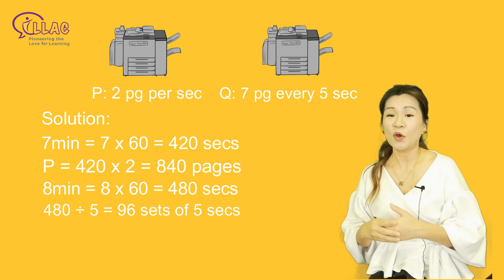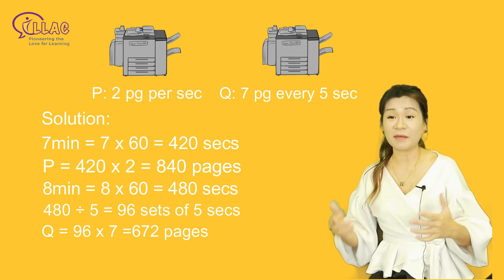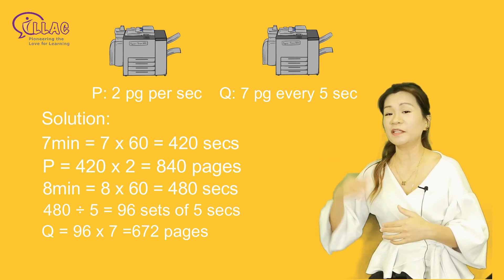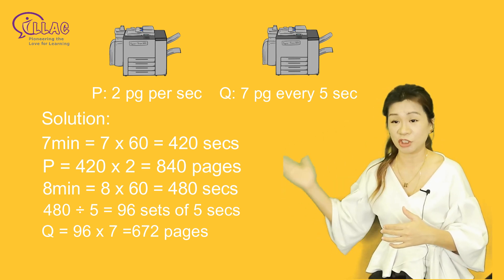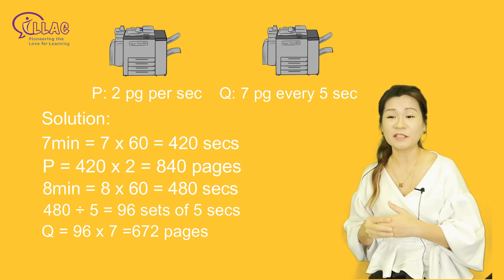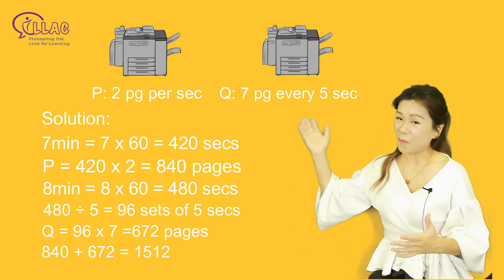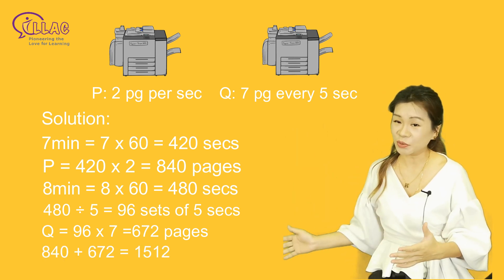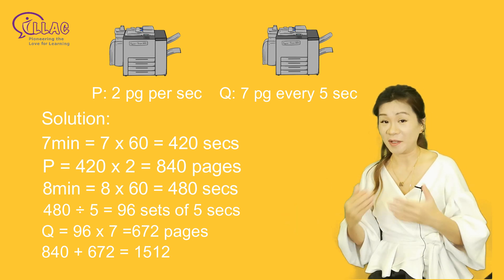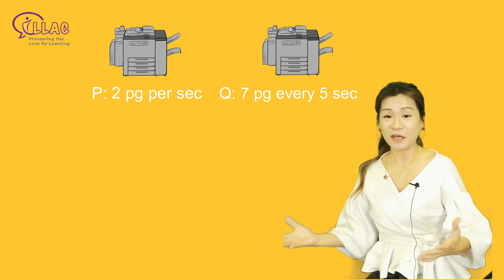Thereafter, we'll take the number of 5-second sets, multiplied by 7 pages, to find the total number of pages that Machine Q has printed for part 2. Finally, we add part 1 and part 2 together to get the final answer: 1512.